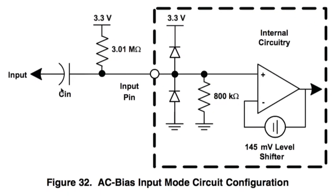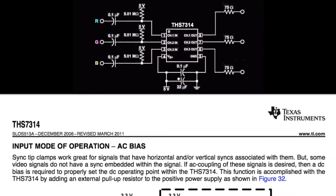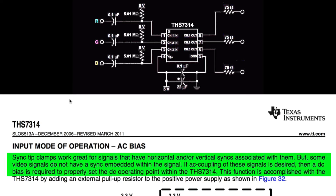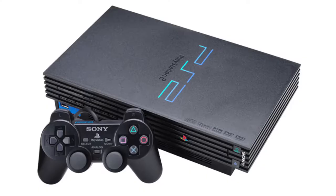Here's TI's schematic for an AC biased input. Note that the pull-up resistor's value changes to 5.01 megaohm with a 5-volt power supply. Reading the AC bias input mode section of the data sheet, it says sync tip clamps work great for signals that have H and/or V sync associated with them, but some video signals do not have sync embedded. If AC coupling is desired for those signals, then a DC bias is required to properly set the DC operating point. I did check the RGB lines on the PC Engine for sync and it's not on any of them. Some examples of sync being embedded on video lines include the PS2, which has sync on green.